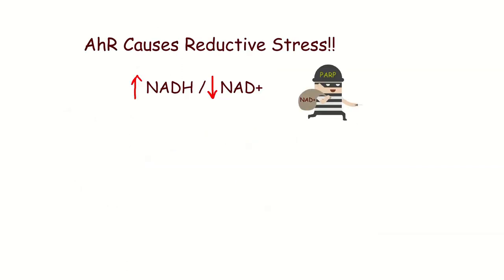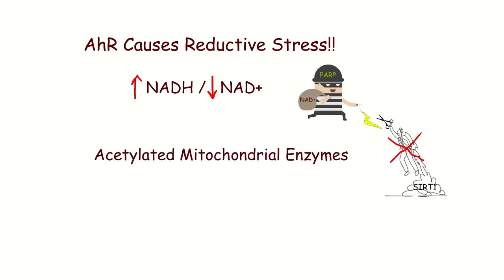This is done in mice, but you can see that when TCDD activates the aryl hydrocarbon receptor, NAD+ levels drop by almost half in response to the activation of PARP. This causes reductive stress — it lowers NAD+ and also increases the NADH to NAD+ ratio, which is not what you want.